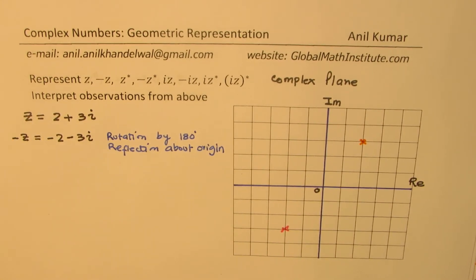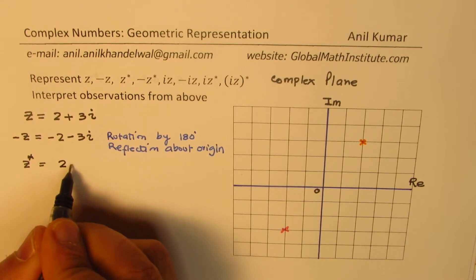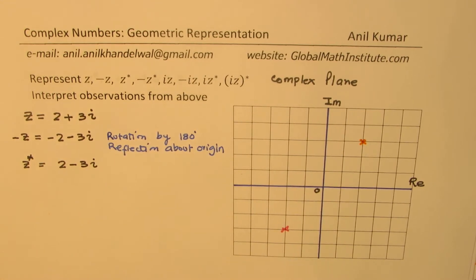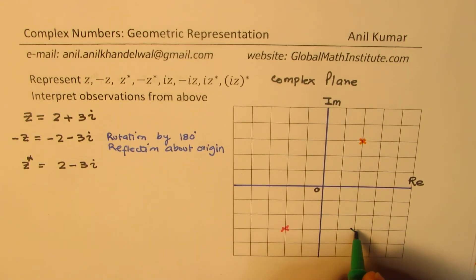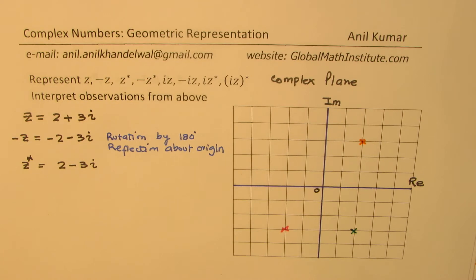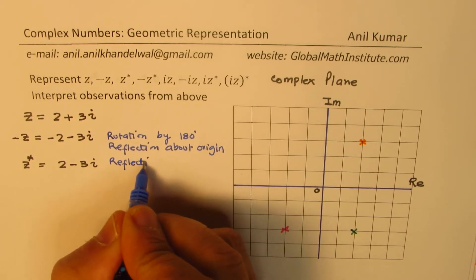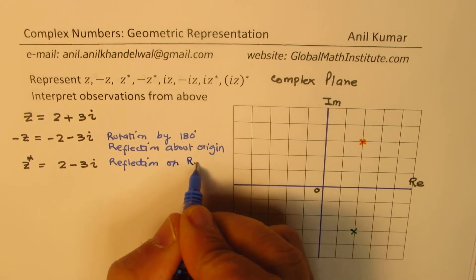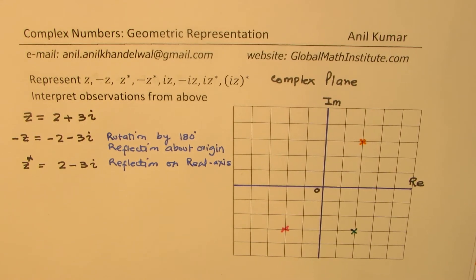Now let's talk about the conjugate. The conjugate of our complex number is 2 minus 3i. 2 minus 3i means the point will be positioned here — same real part, but the imaginary part flipped. This means it is reflected on the real axis. So the conjugate is basically a reflection on the horizontal real axis.